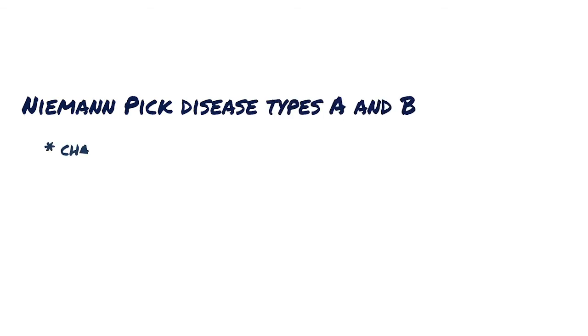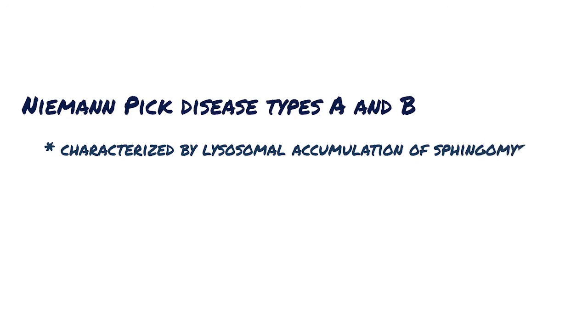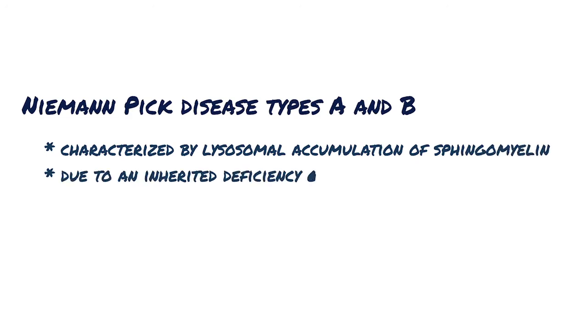Niemann-Pick disease types A and B are two related disorders characterized by lysosomal accumulation of sphingomyelin due to an inherited deficiency of sphingomyelinase.